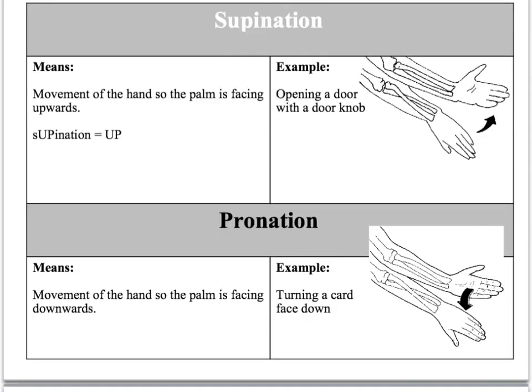Supination and pronation. Supination is the movement of the hand so the palm is facing upwards. A little way to remember it: S-U-P-I-N-A-T-I-O-N spells supination — the U-P means up, so supination is rotating so the palm is upwards. And pronation is so the palm is facing downwards.